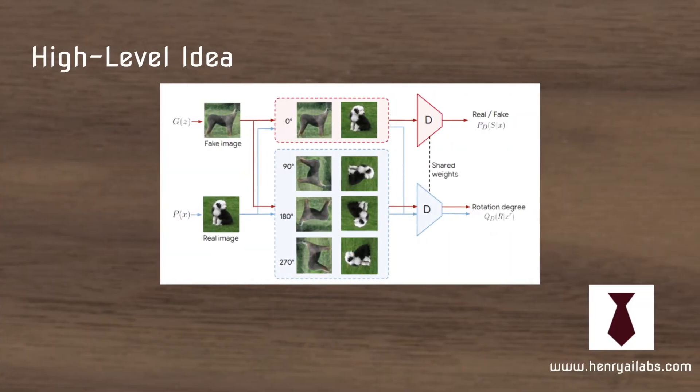The high-level idea is that as you train GANs, in addition to things like mode collapse, training instability, and spiking gradients, you have to deal with the problem found in all sorts of deep learning tasks, which is catastrophic forgetting. The generator distribution is changing during training, and therefore the discriminator's decision boundary is fluctuating in an odd way. The idea is that you add this auxiliary task to stabilize the representations of the discriminator.